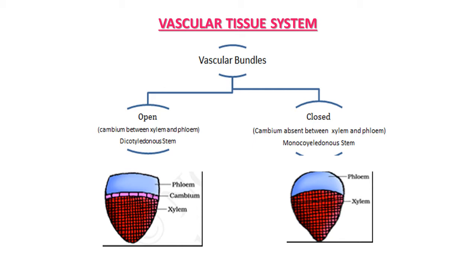The special feature of open vascular bundle is that cambium, a secondary meristematic tissue, is present in between phloem and xylem. In closed type of vascular bundle, no secondary meristematic tissue like cambium is present in between phloem and xylem. This type is generally observed in monocotyledon stem. So in open type, cambium is there between phloem and xylem, but in closed type, no meristematic tissue like cambium is present.